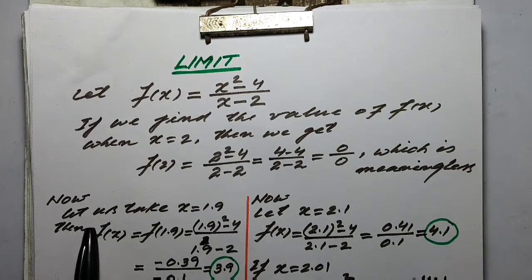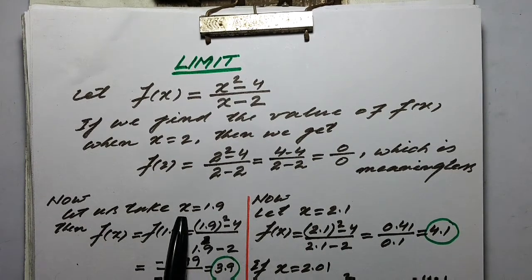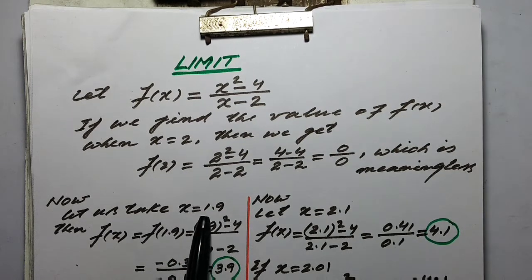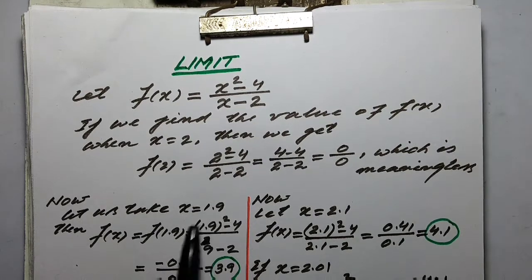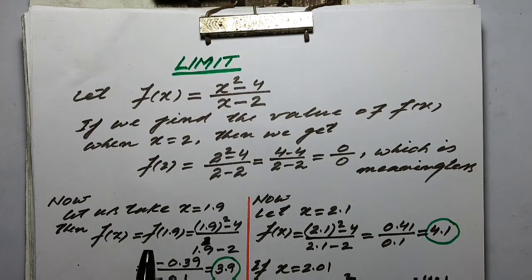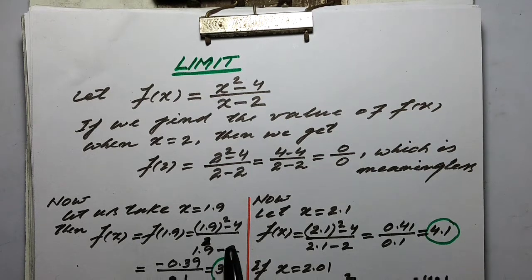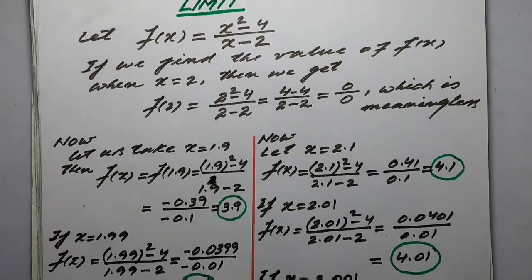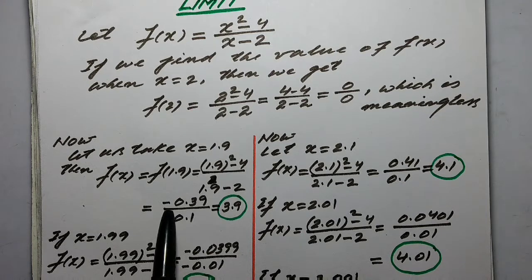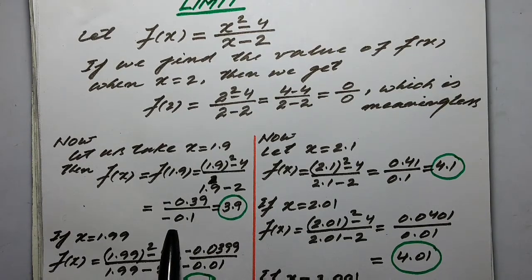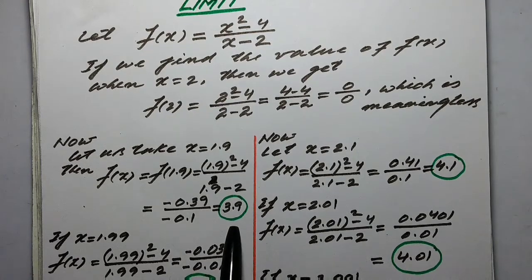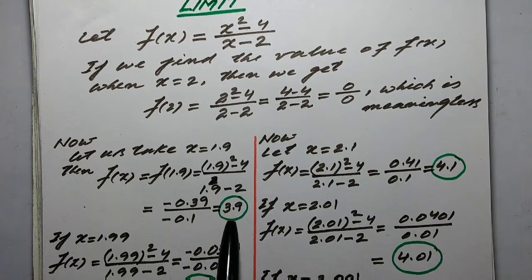So now we take x equal to 1.9 — that means we are not taking x equal to 2 exactly, but a value which is close to 2. f(1.9) is equal to 1.9 squared minus 4 upon 1.9 minus 2. Simplifying, we get in the numerator minus 0.39 and in the denominator minus 0.1, so we get 3.9. So if x is equal to 1.9 then f(x) is equal to 3.9.